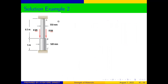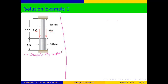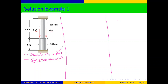When given a statically indeterminate problem, they are solved using two methods. The first one is using the compatibility method, and the second one is using the superposition method. We solved a similar example using the superposition method; now we want to solve the same example using the compatibility method.